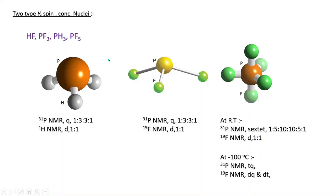Today we will discuss the two half-spin system — that means two atoms that are concentrated nuclei, meaning their natural abundance is high. A half-spin system means the I value, that is the nuclear spin quantum number, will be one-half. Both atoms — phosphorus, fluorine, and hydrogen — all have half spin and are concentrated nuclei with very high natural abundance.